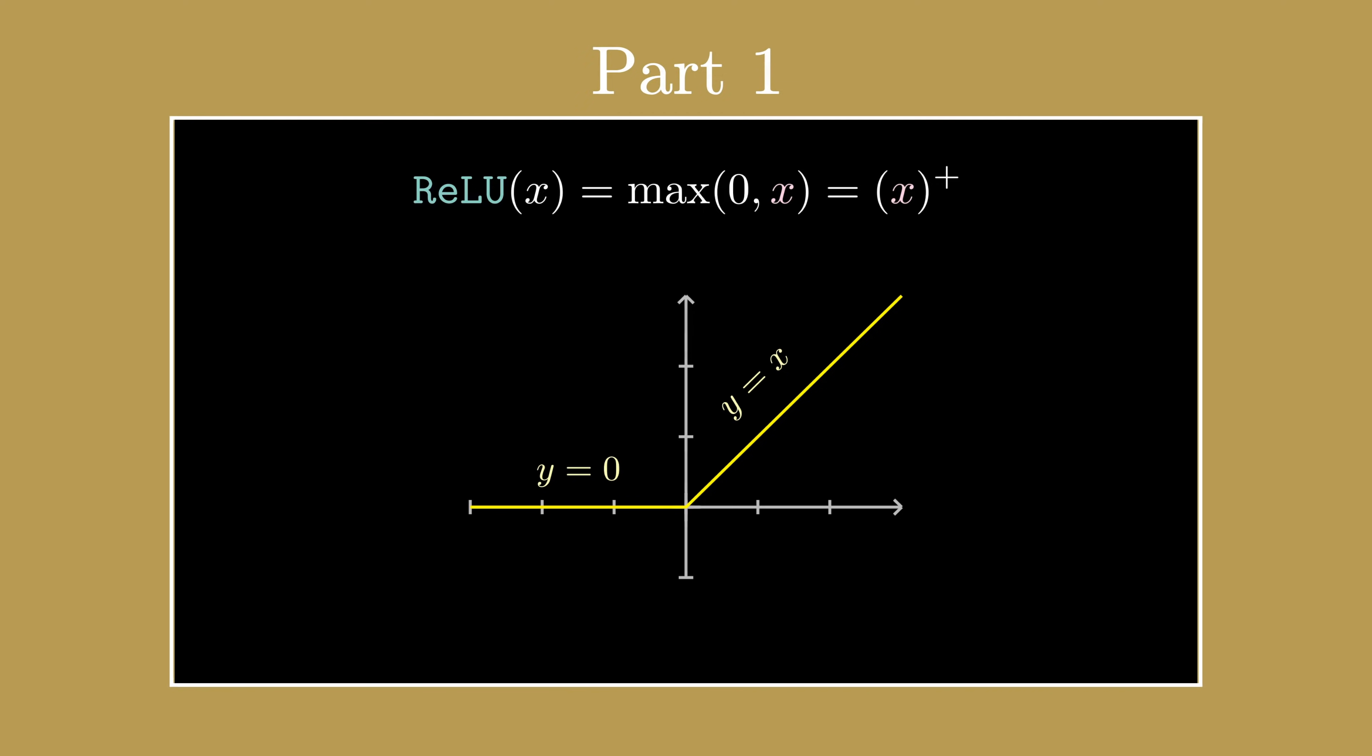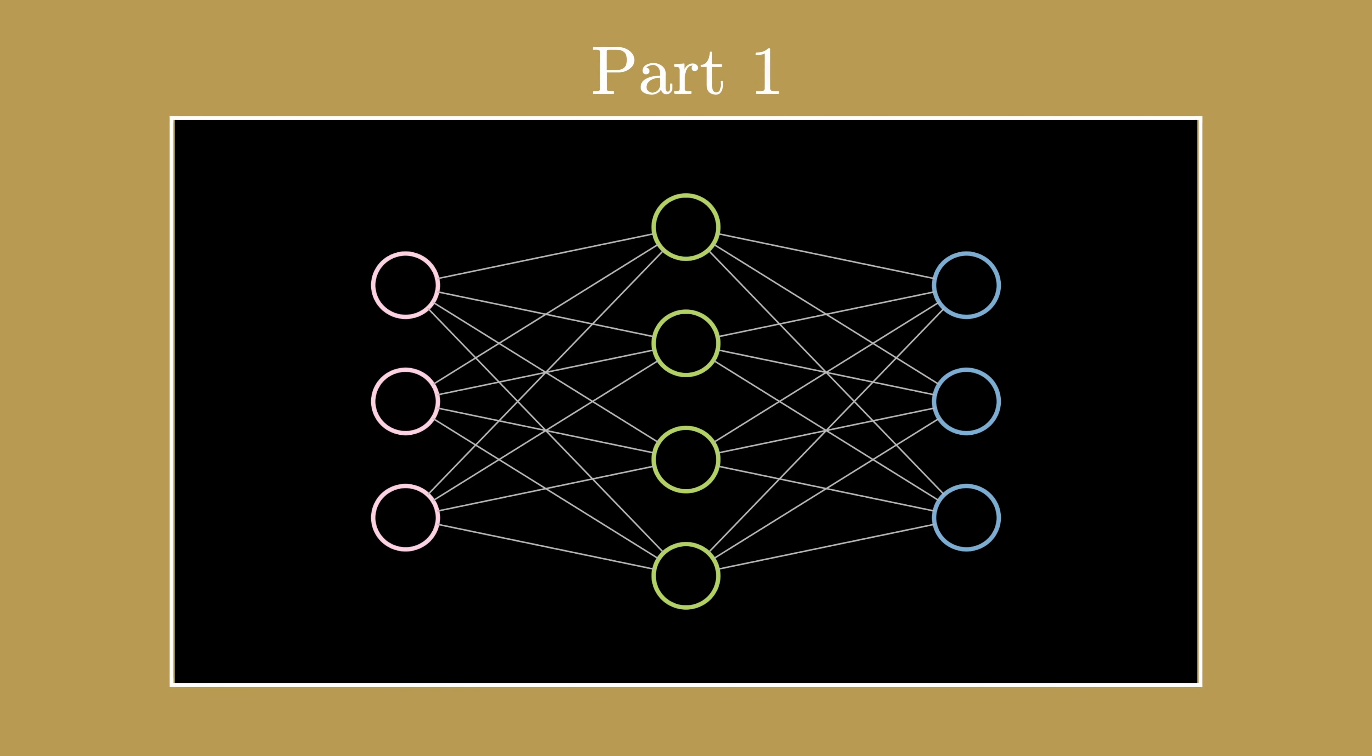This gave us a nice way to linearly separate data, but the problem lies when we're trying to model a complicated dataset. We found that when we layer artificial neurons together, the non-linearity of the activation functions adds up, and we can model complicated decision boundaries.